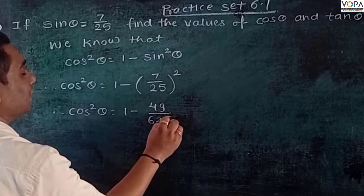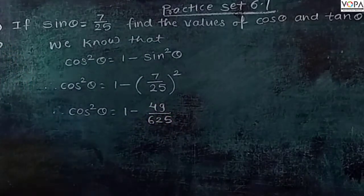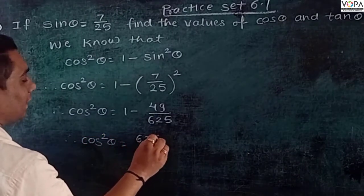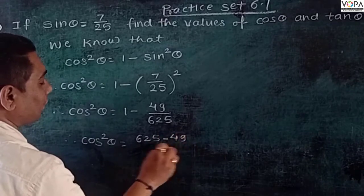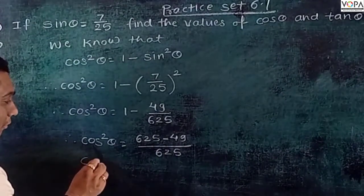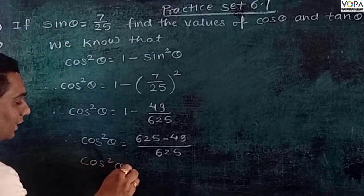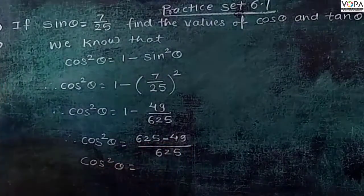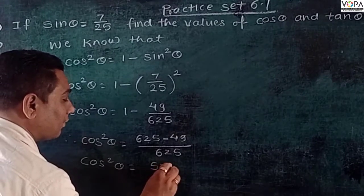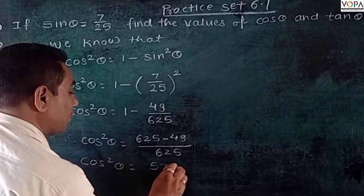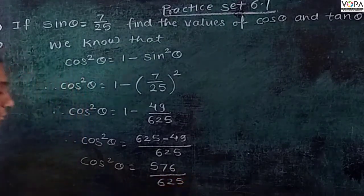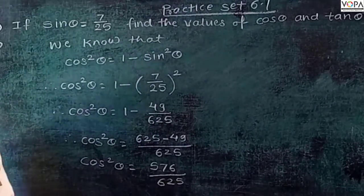So therefore cos² θ = 1 - 49/625. You can subtract this: 625 - 49 = 576/625. Now taking the square root on both sides...